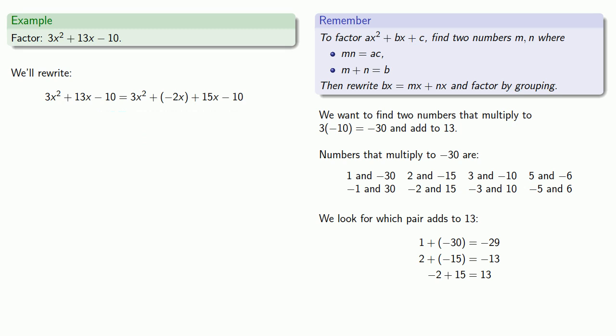And now we're in a position to factor by grouping. So let's group our first two terms and our last two terms. Now our first two terms have a common factor of x, so we'll factor that out and get x(3x - 2). Our second pair of terms has a common factor of 5, so we can remove that and factor as 5(3x - 2). And now both terms have a factor of 3x - 2, so we'll remove that common factor, leaving us with (x + 5)(3x - 2).